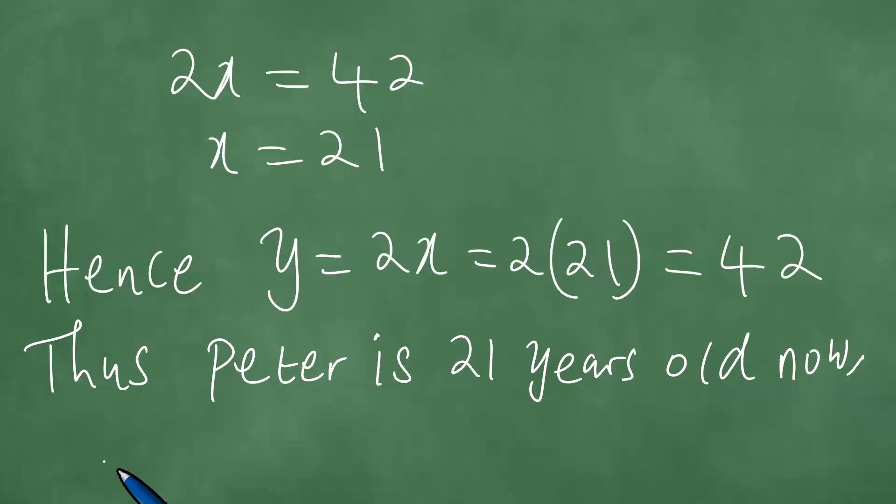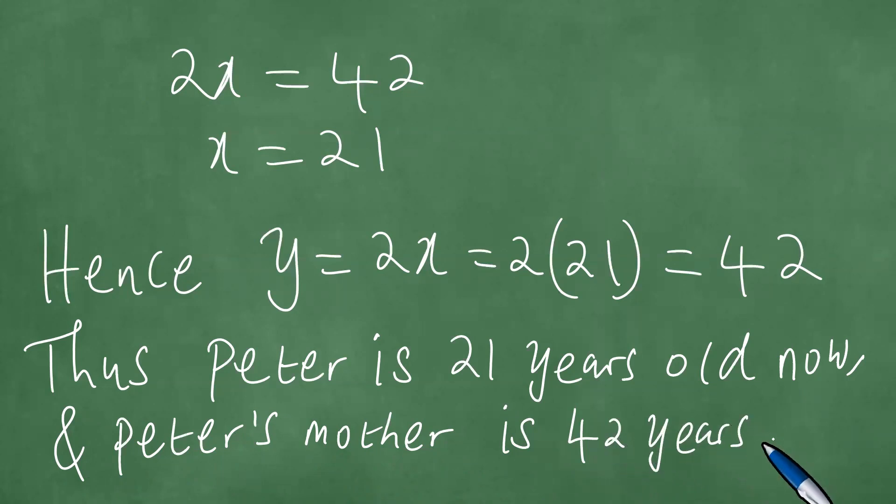And Peter's mother is 42 years old. Thus Peter is 21 years old now, and Peter's mother is 42 years old.